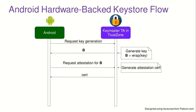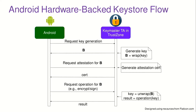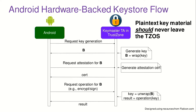Now we have an encrypted key blob, but we want to actually do things with it. One thing is the attestation process, where TrustZone attests that a key was generated securely inside it, allowing Android to prove to third parties that keys were generated securely. When we want to use a key, we send the encrypted blob to TrustZone, request an operation like a signature, the key is decrypted inside TrustZone, the signature is computed there, and only the result is returned. The plaintext private key should never leave TrustZone.